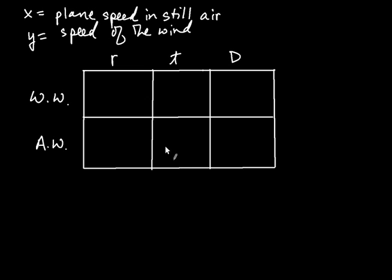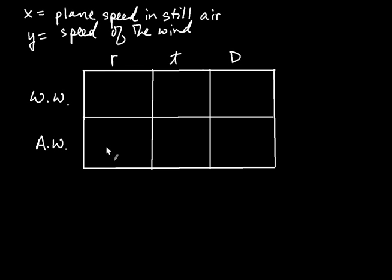Each of the six squares here has a physical meaning associated with it. For example, one square is the distance that the plane goes with the wind. Another square would be the rate that the plane goes against the wind. And one more — this square is the time that the plane goes against the wind. Every square has a physical meaning.